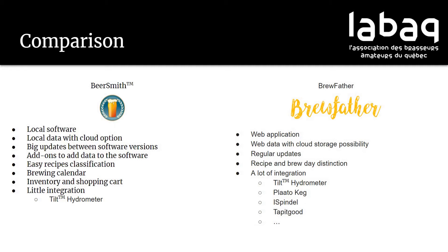The big advantage I found with Brewfather is they separate the recipes and the brew day — the batch of your beer. So you have your recipe on one side and the brew day, the batch, on the other side. I'll show you that later. There's a lot of integration with Brewfather: Tilt, but way better than Beersmith does. There's Plaato Keg, iSpindel, Tappi Good — a lot of integration is possible with Brewfather.